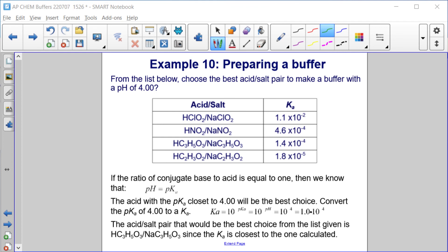Convert the pKa of 4 to a Ka, so 10 to the minus pKa, or 10 to the minus 4. 10 to the minus pH gives us the hydronium ion concentration, or the Ka, closest to 1 times 10 to the minus 4. We want to find the one that's closest to 1 times 10 to the minus 4. The acid-salt pair that would be the best choice from the list given is HC3H5O3 and NaC3H5O3, since the Ka is closest to the one calculated.